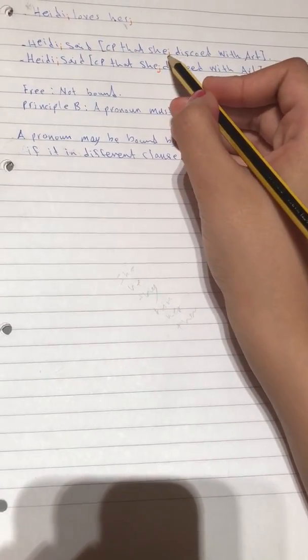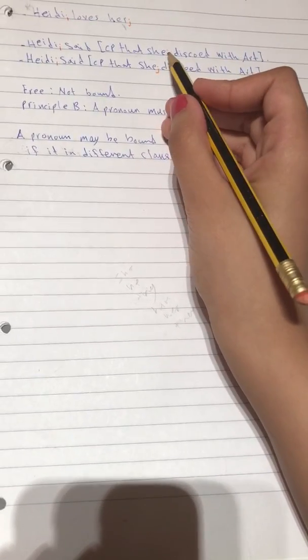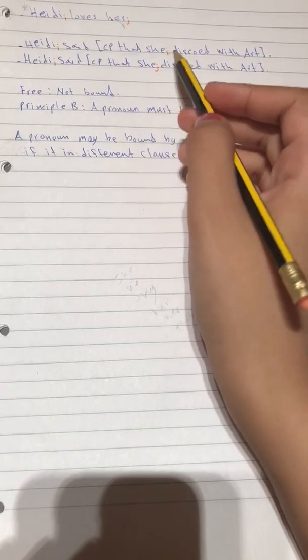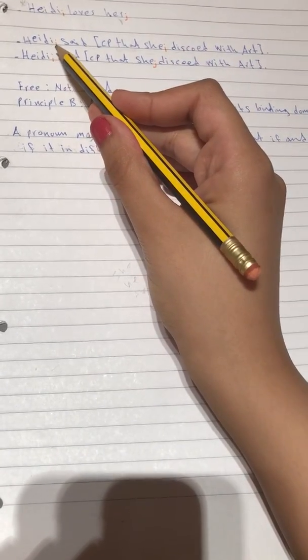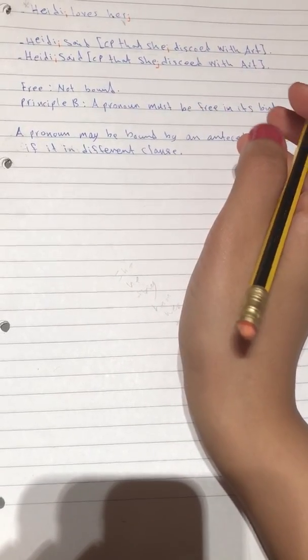Here she refers to, it refers to Heidi. Why is that? Because we have endings which endings help us a lot to know if that pronoun refers to the same person or not. Okay, she refers to Heidi because here we have endings I. So they have the same endings which means they are the same person.